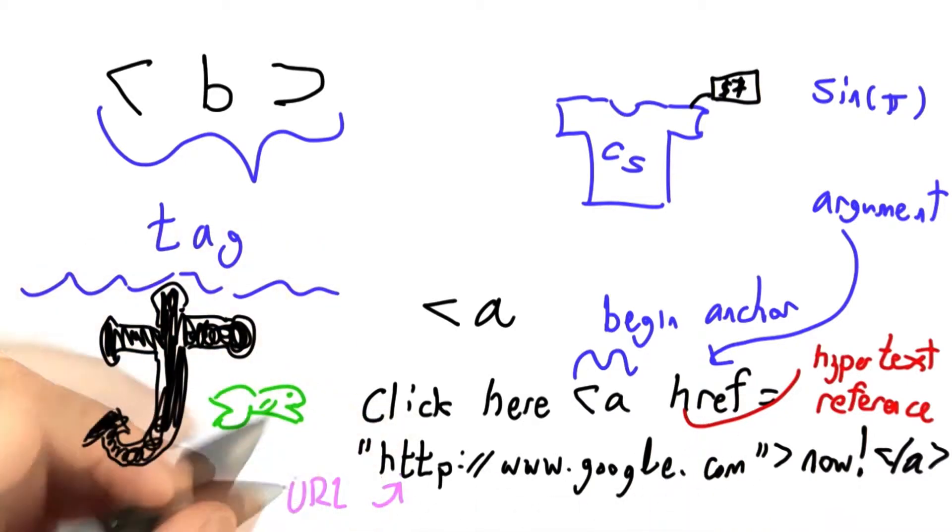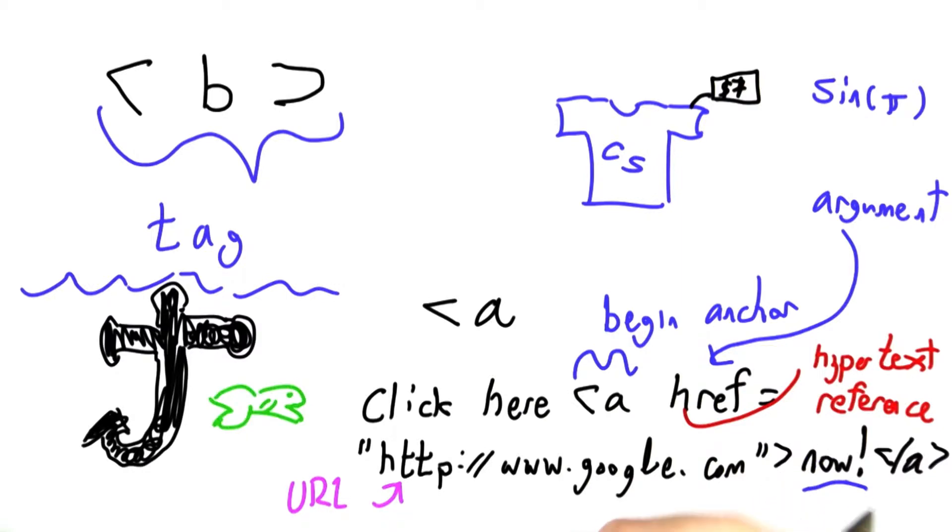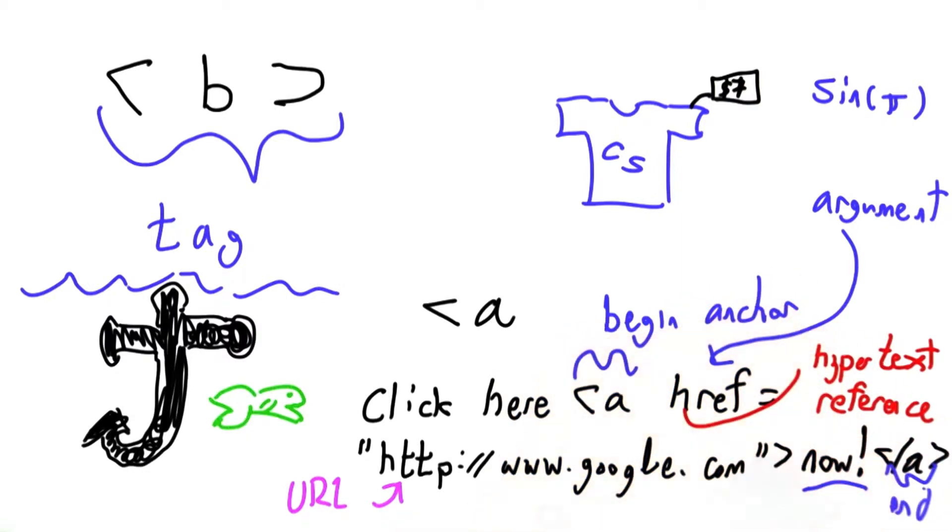Here I've given a string that is a URL, a web address, hypertext transfer protocol, google.com. This text in the middle is often rendered in blue with an underline, although it doesn't have to be. And then over here, we're ending the anchor tag.